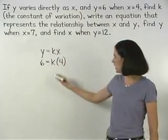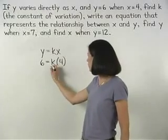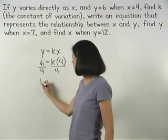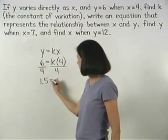Now to solve for k, we divide both sides of the equation by 4, and we find that 1.5 equals k.